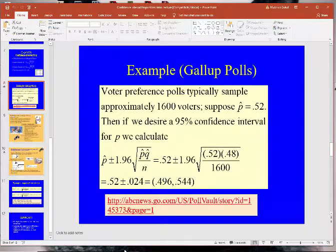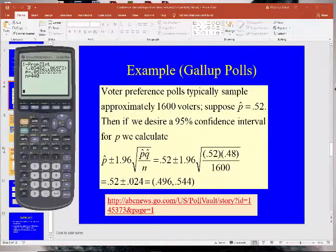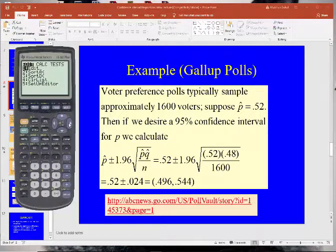Like if we go back to this problem right here in the homework, or in the lecture slide, excuse me. If I hit stat, go back to tests, go down to one proportion z interval. Here, you'd put in the number of X value, the number of people who said yes. Well, unfortunately, I have to back out of that. It would be 0.52 times 1600.